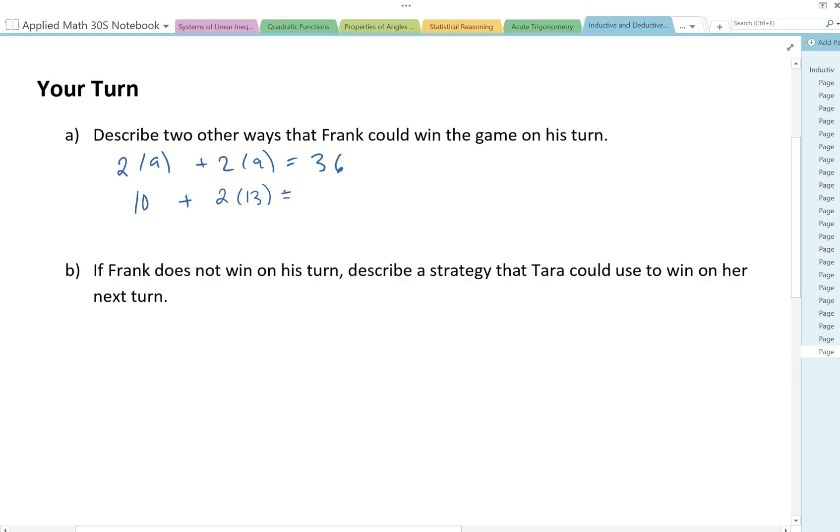That would be a possibility to give you 36. And another one that I got was what if his first throw was 20 then his second throw would be a double 8. Can you think of any other ones?